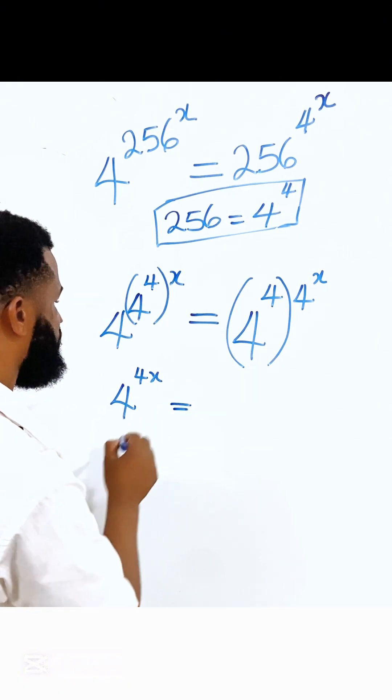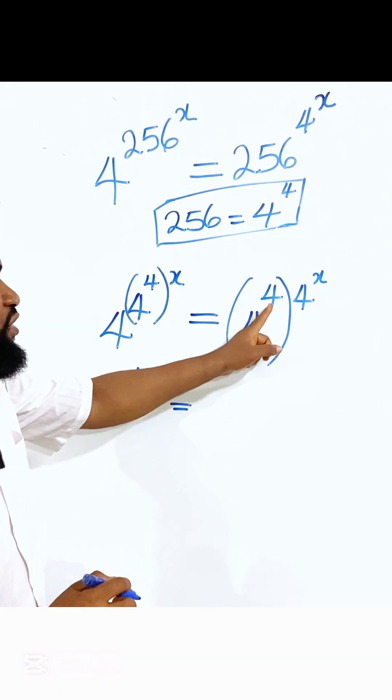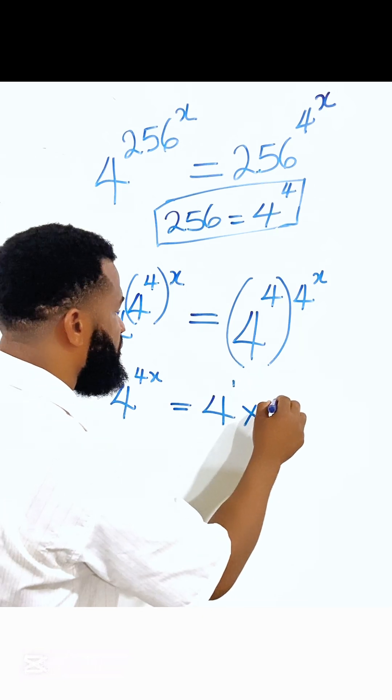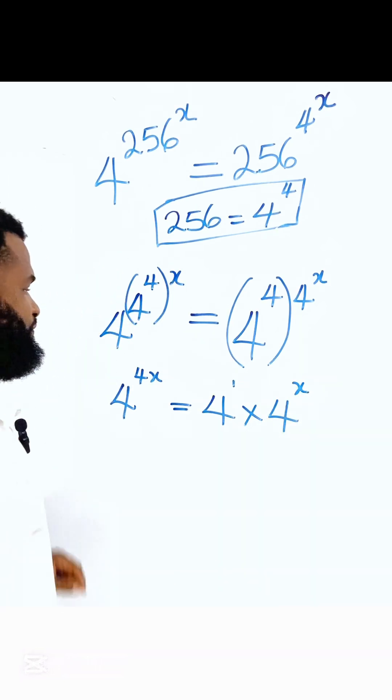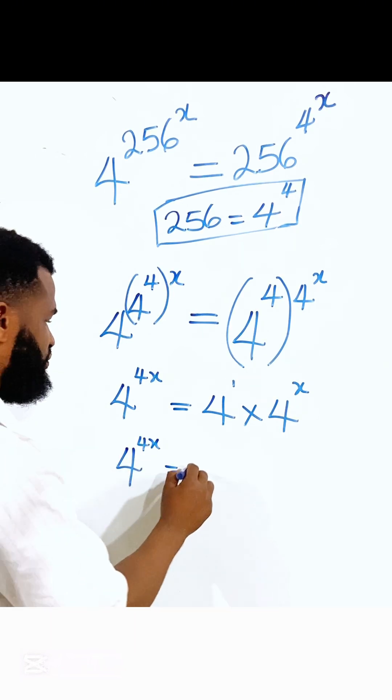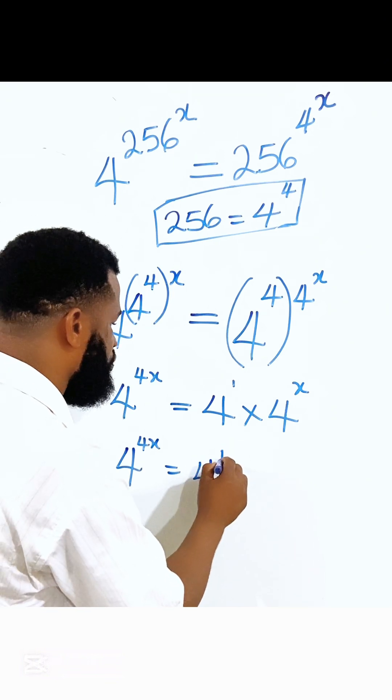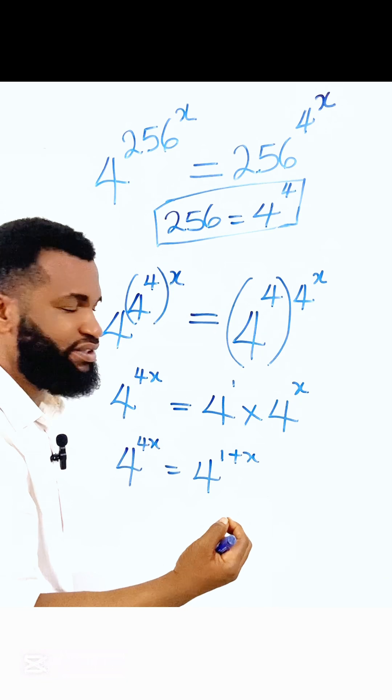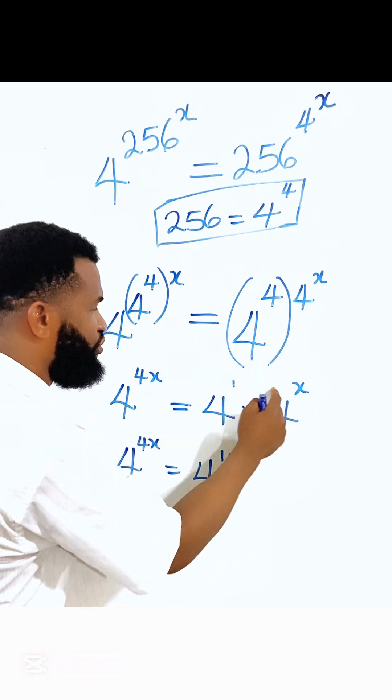Good. It's equal to, the power to this 4 is going to be 4 raised to power 1 times 4 raised to power x. So this is going to be 4 raised to power 4x equals 4 raised to power 1 plus x. Because they are multiplying according to the law of indices, their powers are going to add.